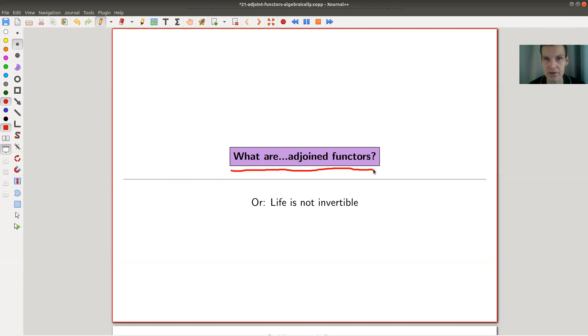There are also many ways to define, so equivalent ways to define adjoint functors. And the slogan for today is that adjoint functors are like life and life is not invertible.